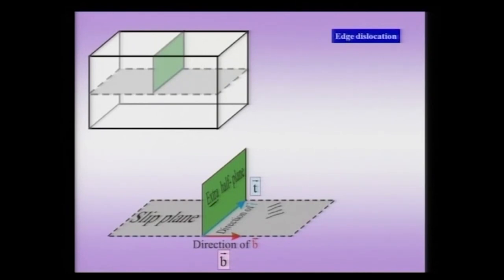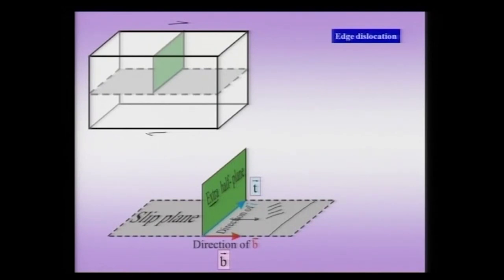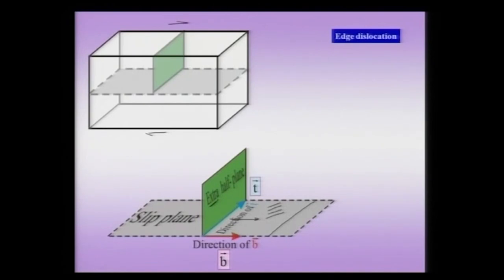If I shear my crystal — applying shearing forces — this extra half-plane would move parallel to b, and at a certain time the dislocation line could move and finally leave the crystal. Since this edge dislocation is associated with the extra half-plane, it is easy to visualize, and many of the characteristics of this edge dislocation can be understood based on this kind of construction.